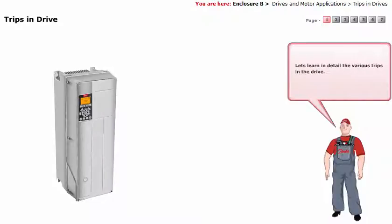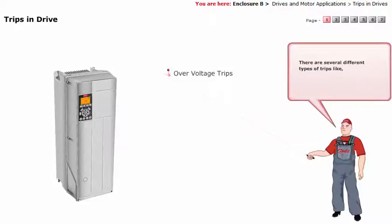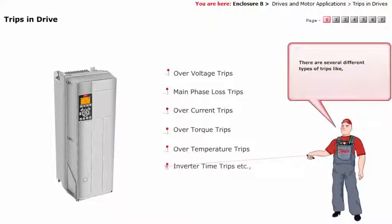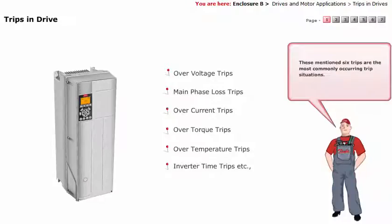Let's learn in detail the various trips in the drive. There are several different types of trips, like over voltage trips, main phase loss trips, over current trips, over torque trips, over temperature trips, inverter time trips, etc. These six trips are the most commonly occurring trip situations. For a detailed description on the various trips in the drive, just click on the icon.